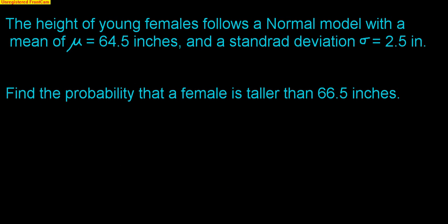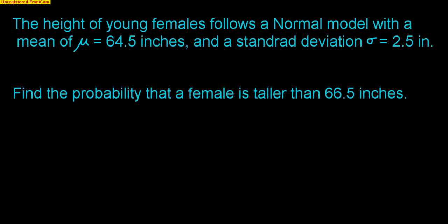Here's the example for today. The height of young females follows a normal model with a mean of mu = 64.5 inches — that's a population mean — and a standard deviation of sigma = 2.5 inches — a population standard deviation. The first question is: find the probability that a single female is taller than 66.5 inches.